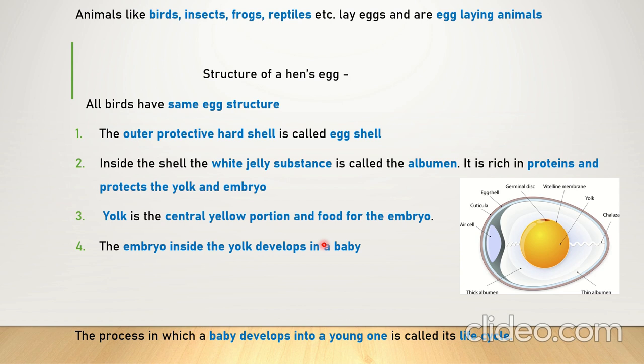Even humans have a life cycle — from a baby, we grow through childhood, become teens, then youths, then adults, and then old people. Similarly, every organism has a life cycle. These life cycles are very interesting, so we'll cover them in the next video. For now we have a good understanding of how organisms reproduce, how they give birth, and how they lay eggs.